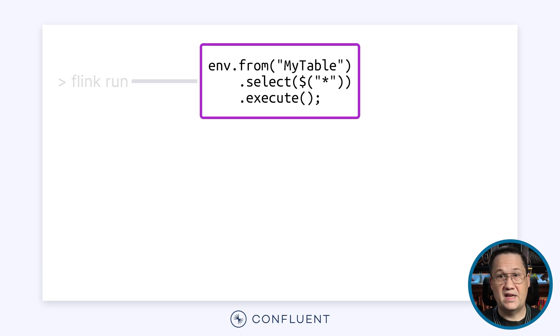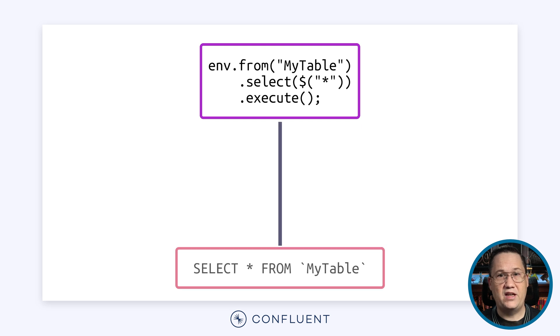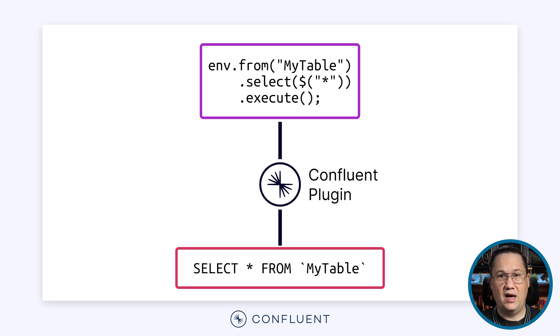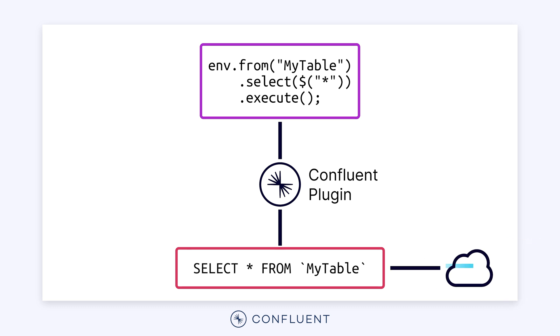In reality, it's more complicated than that. Portions of your code might be executed locally by the Flink command line interface. It will create the low-level instructions and upload them to the cluster where they will be executed by Flink. So Flink isn't necessarily executing your code — instead, it uses your code to build a set of instructions and executes those. This is the behavior I was expecting. However, in Confluent Cloud, it works a little bit differently. Remember when I said the Table API resembles SQL? Rather than using the Table API to build low-level instructions, Confluent Cloud uses it to construct an actual SQL statement. When you execute a Table API statement, it is converted to the equivalent SQL, and that SQL statement is sent to Confluent Cloud to be executed.